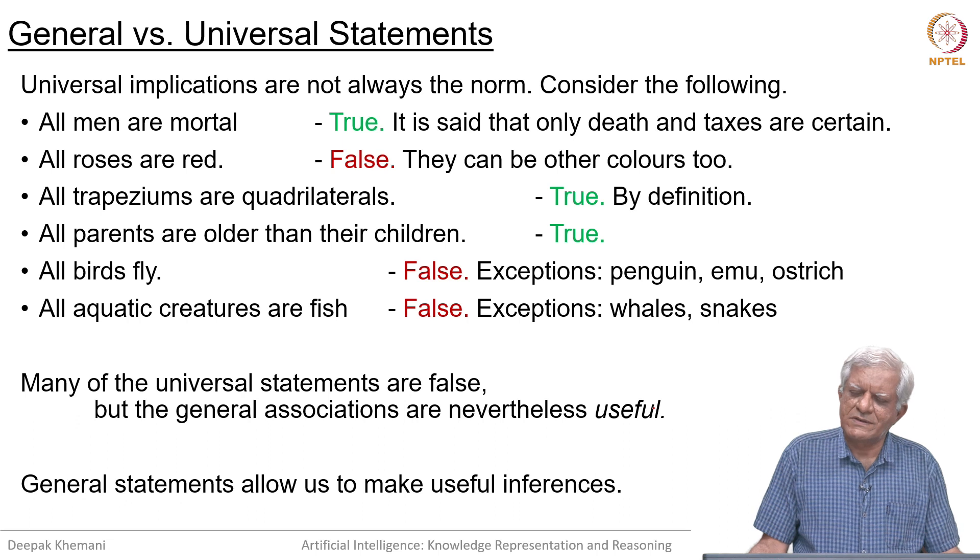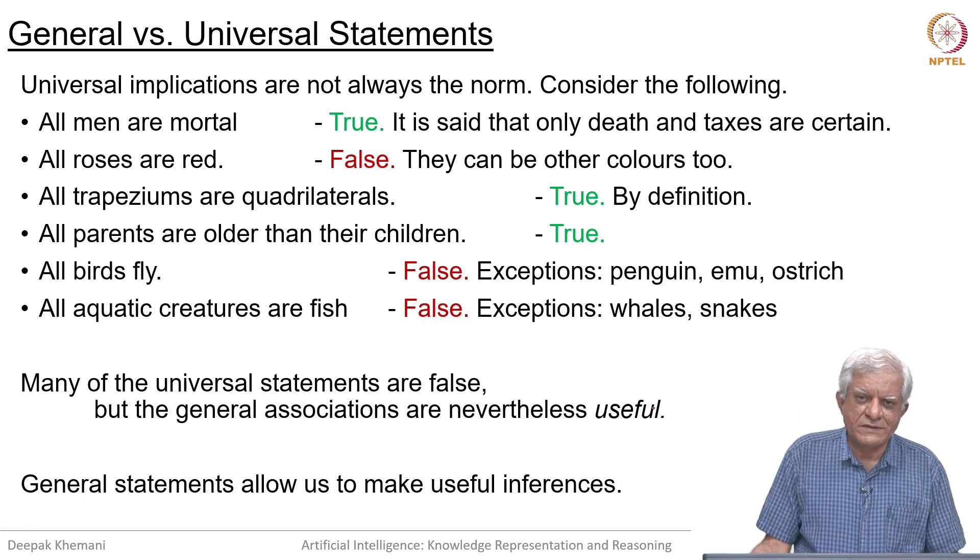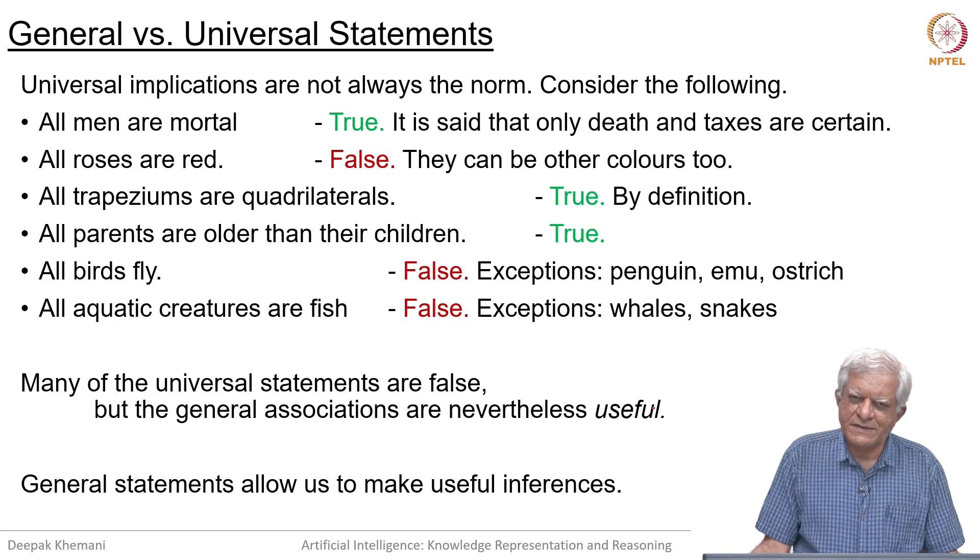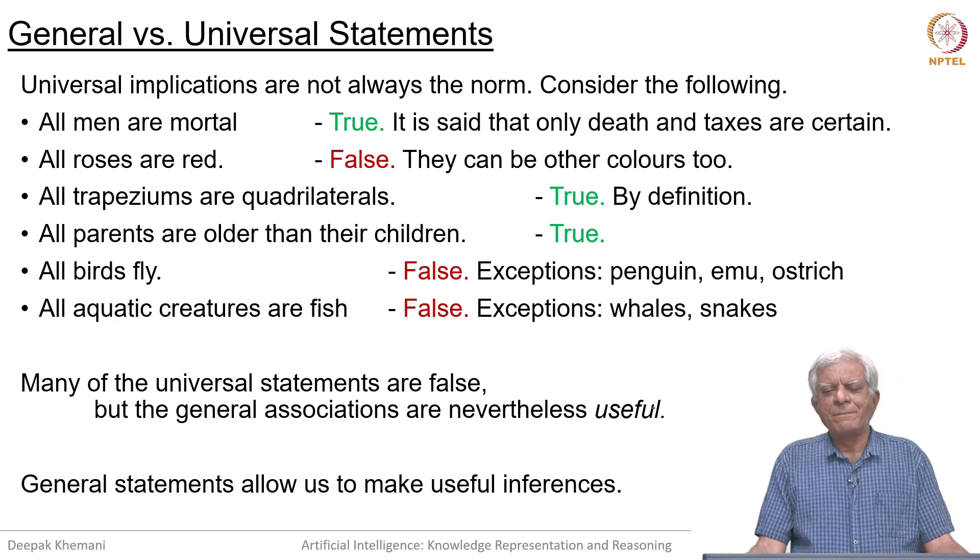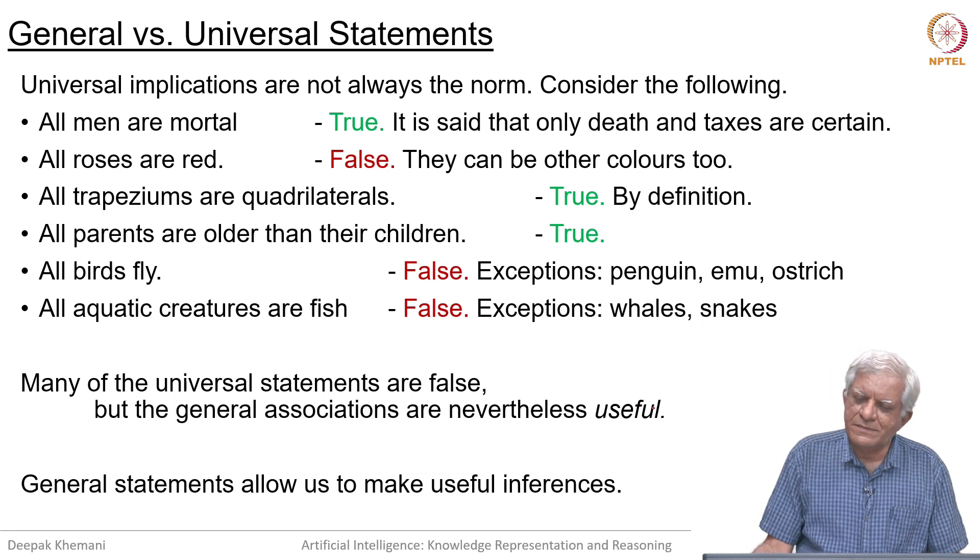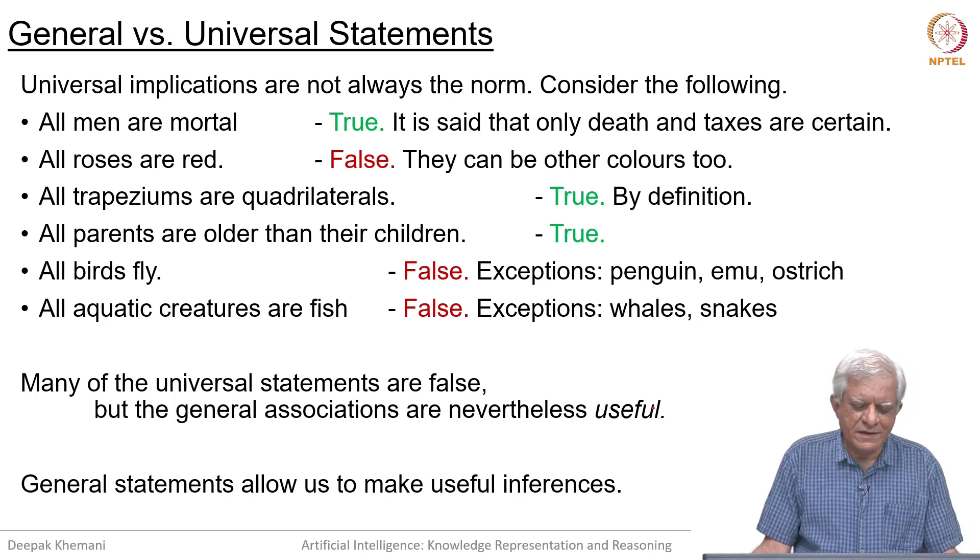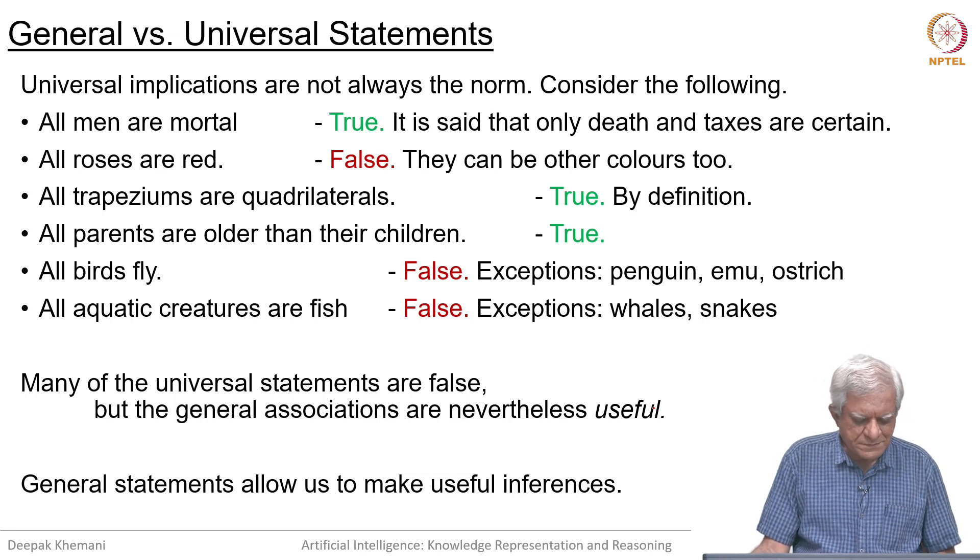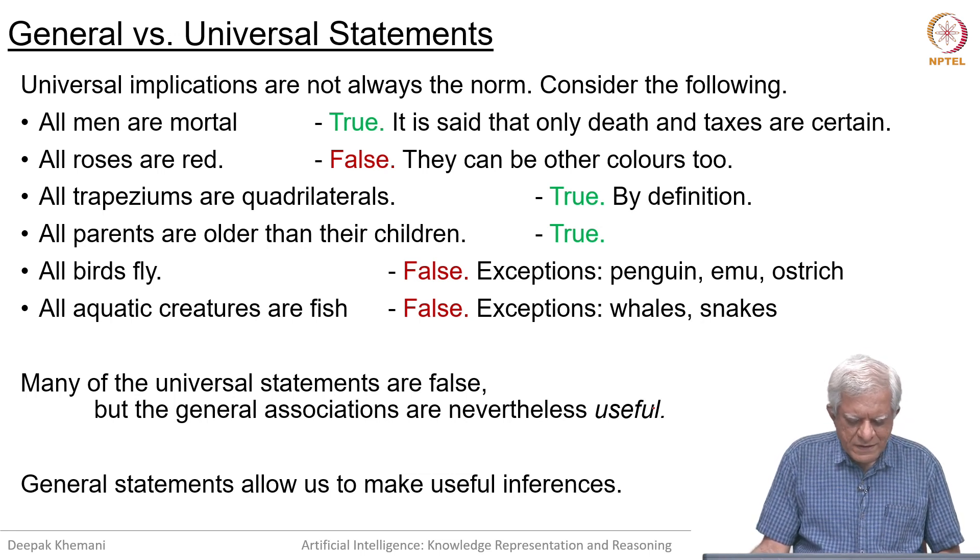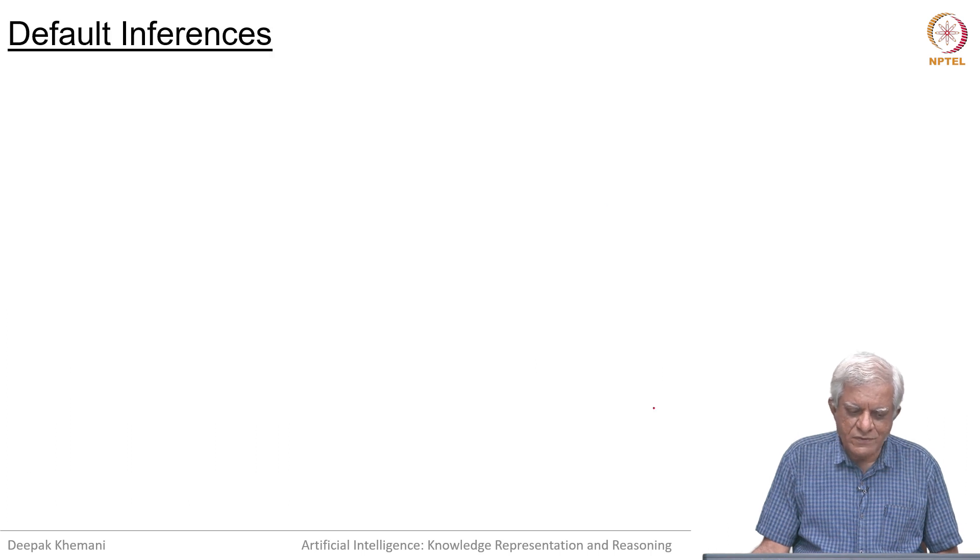Nevertheless, as we have said such associations are useful. We would still like to be able to express them. We will express them as general relations and not universal relations. What we really mean is that in general, for example, birds fly essentially. In general aquatic creatures are fish, may or may not be true, because they allow us to make useful inferences.